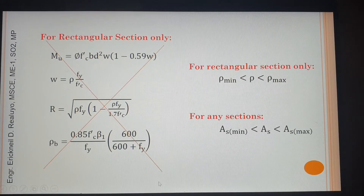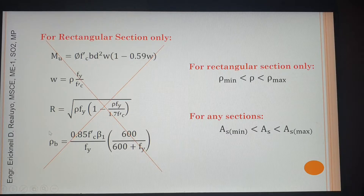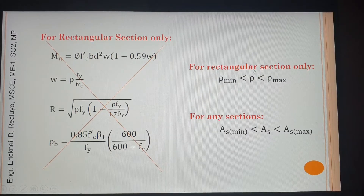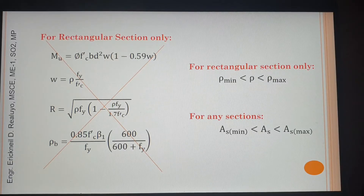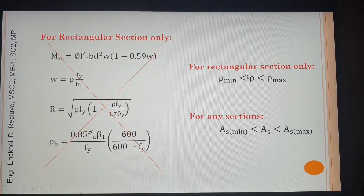Let us not use those formulas anymore — they are not really in our current code. These are the old way of solving RCD problems. For rectangular sections, the structural member could be beams, slabs, footings, or retaining walls. But when you use steel ratios, your approach applies to rectangular sections only.